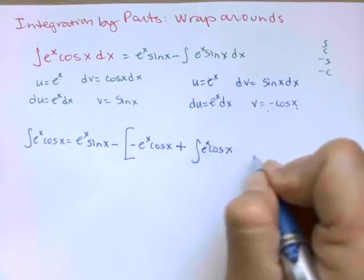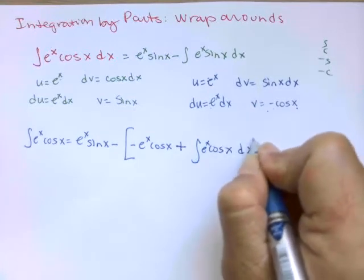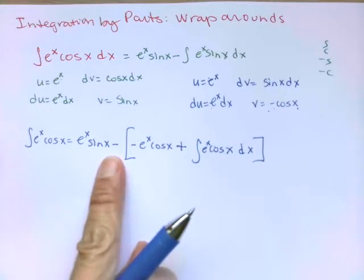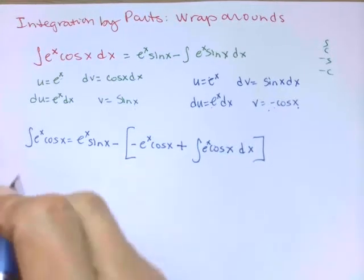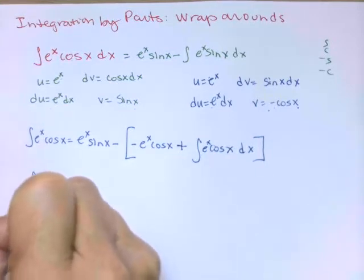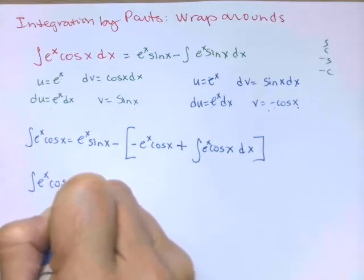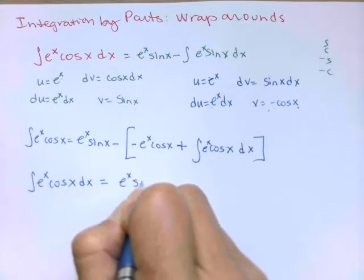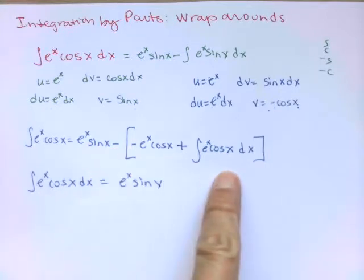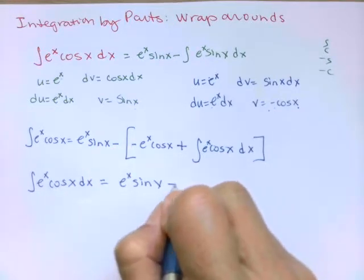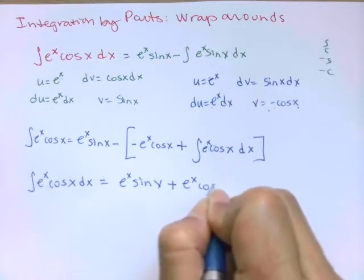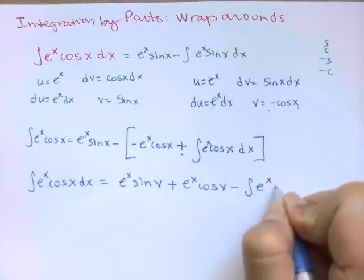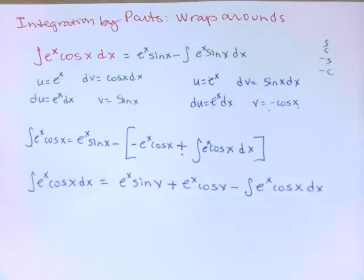Stay with me. Now let's take care of this negative sign. I'm going to take the negative sign through, so integral e to the x cosine x dx—that's where we started—equals e to the x sine x. This negative sign here is going through the parentheses.